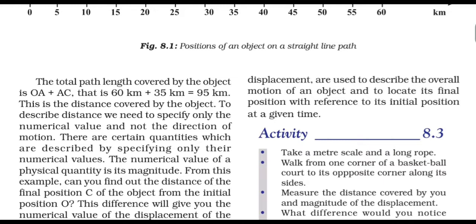The distance comes out to 35. If the total distance covered is 60, then the remaining distance is 35. To specify the total distance covered, we need to specify only the numerical value and not the direction of motion.